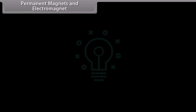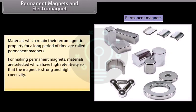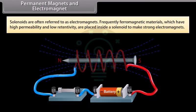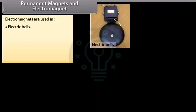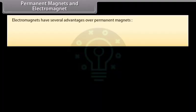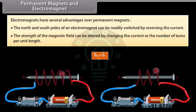Permanent magnets and electromagnets: Materials which retain their ferromagnetic property for a long period of time are called permanent magnets. For permanent magnets, materials with high retentivity and high coercivity are selected — for example, steel, Alnico, and cobalt steel. Solenoids with ferromagnetic cores of high permeability and low retentivity are used to make strong electromagnets. Electromagnets are used in electric bells, loudspeakers, telephone diaphragms, MRI, and cranes to lift heavy materials. Advantages of electromagnets: the north and south poles can be readily switched by reversing the current, and the field strength can be altered by changing the current or the number of turns per unit length.